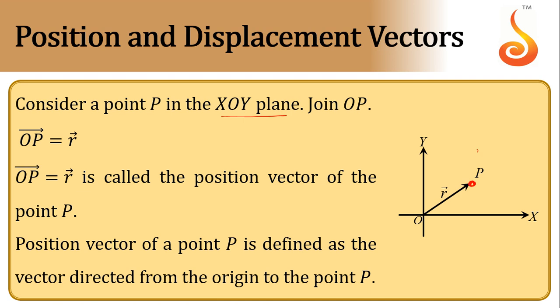This is the initial position of the given particle. If we join these two points, we get what is called the position vector. The position vector is the vector directed from the origin to the point P.